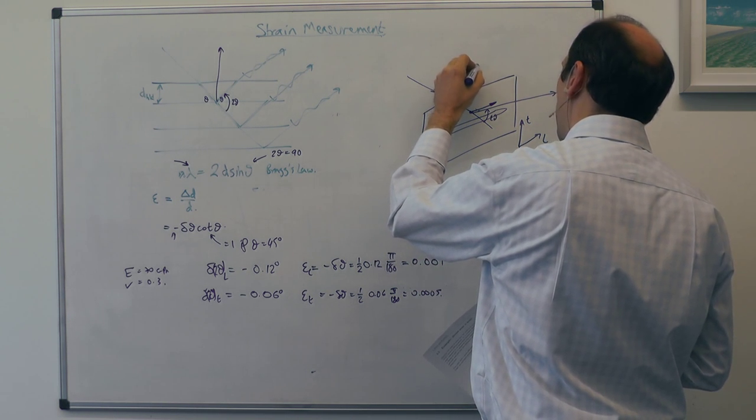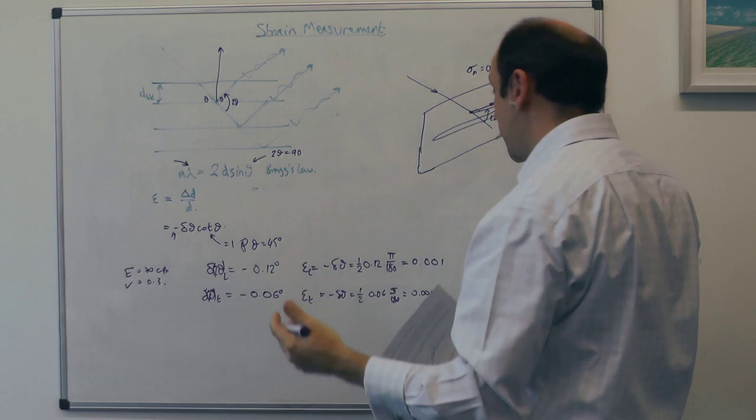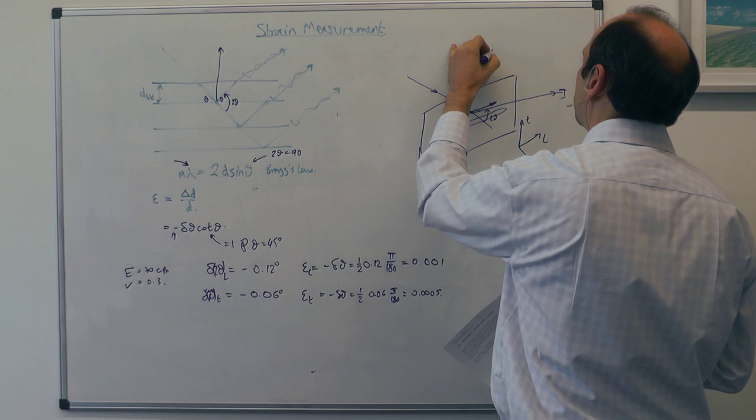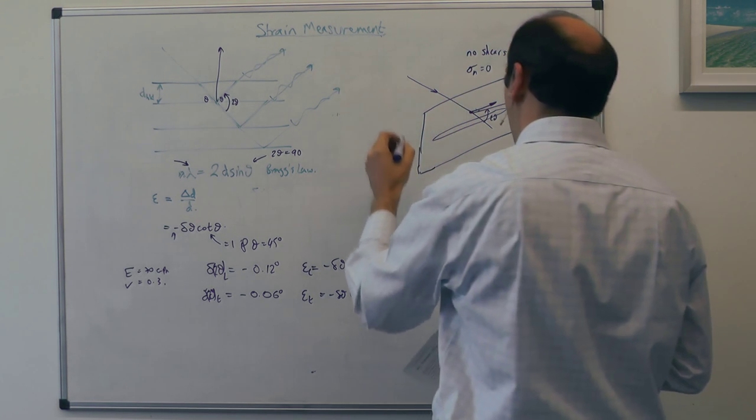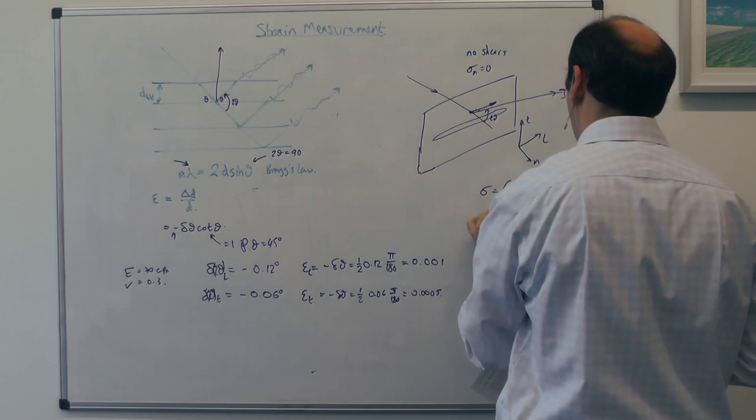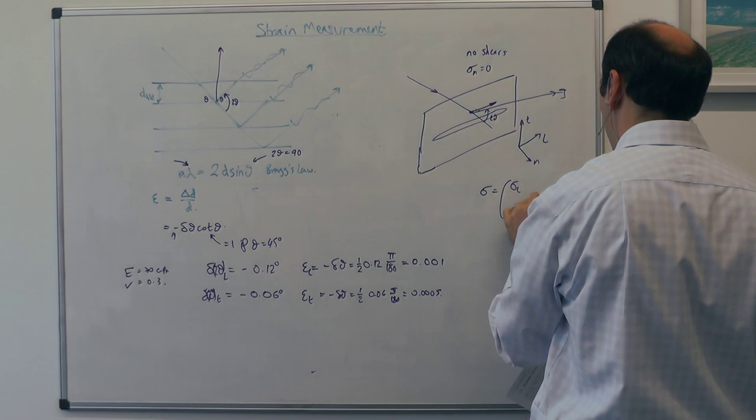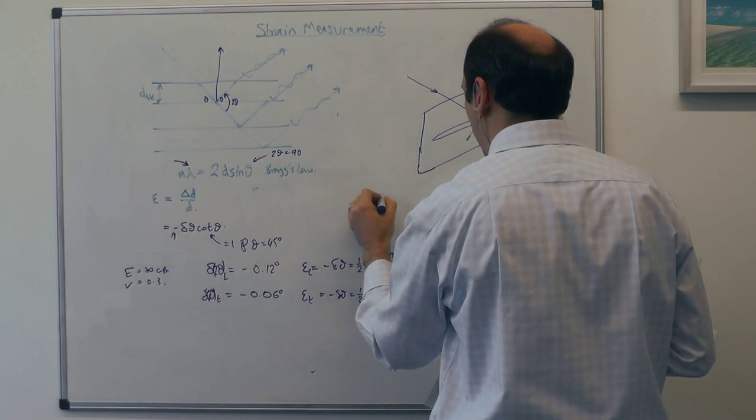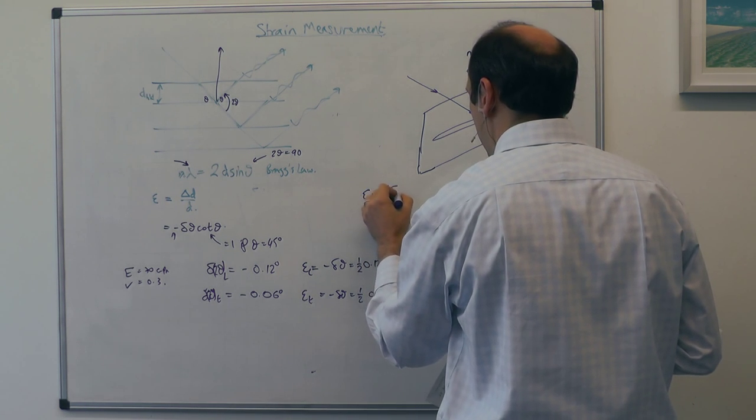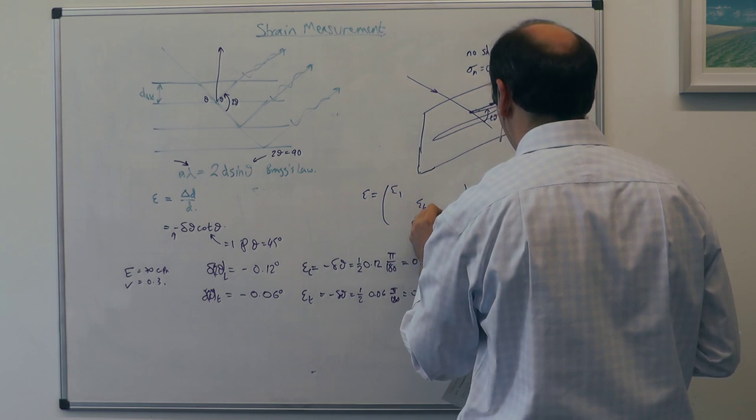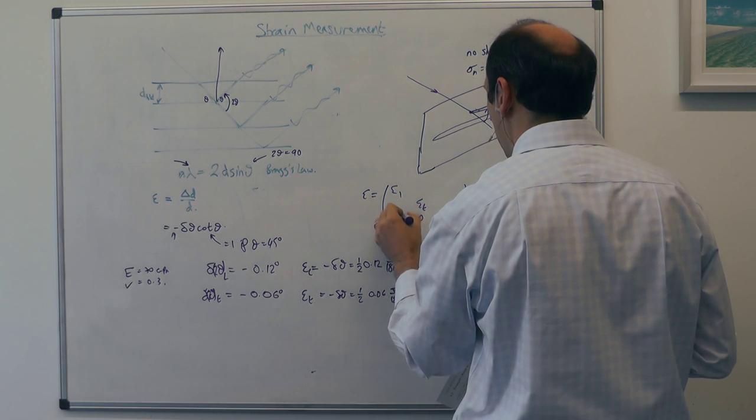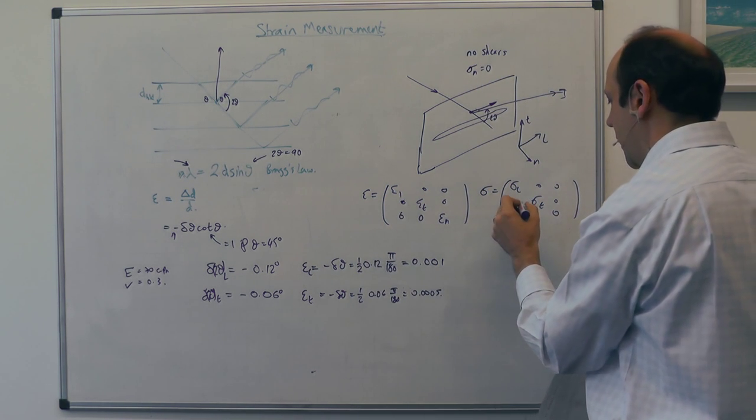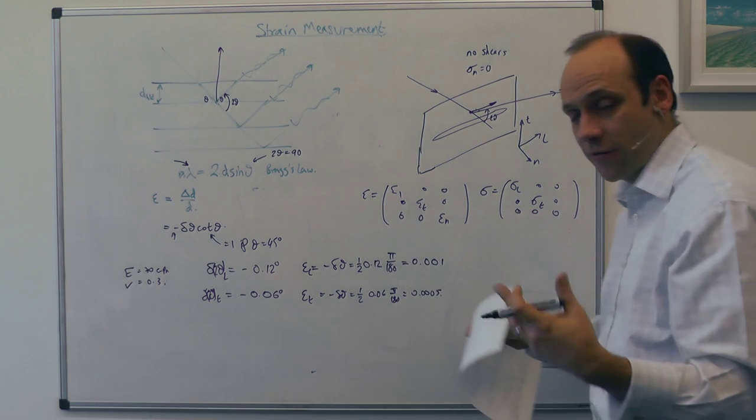so σ normal is 0, and we've assumed that these are the principal strains, so there are no shears. So we know that the stress matrix, therefore, looks like σ long, σ trans, with 0s everywhere else, and we know that the strain matrix looks like ε long, ε trans. We don't know what ε normal is, and 0s everywhere else. It must be 0s everywhere else, because if you've got no stress, you just get the shear modulus directly, therefore you know it's 0.